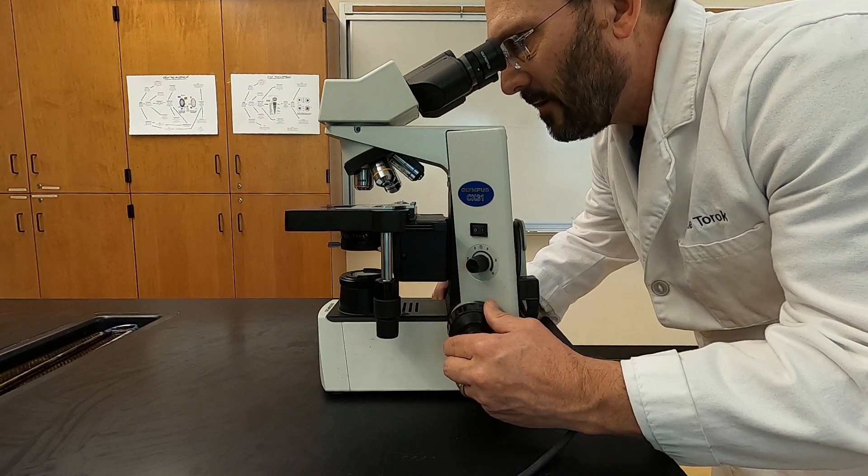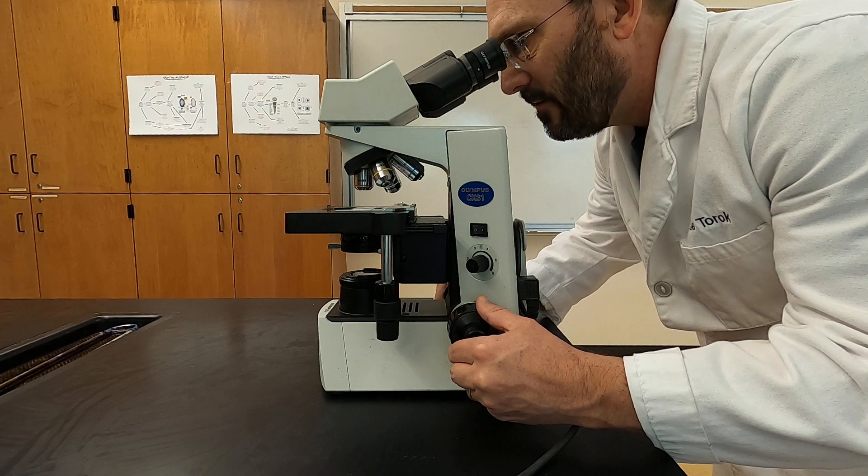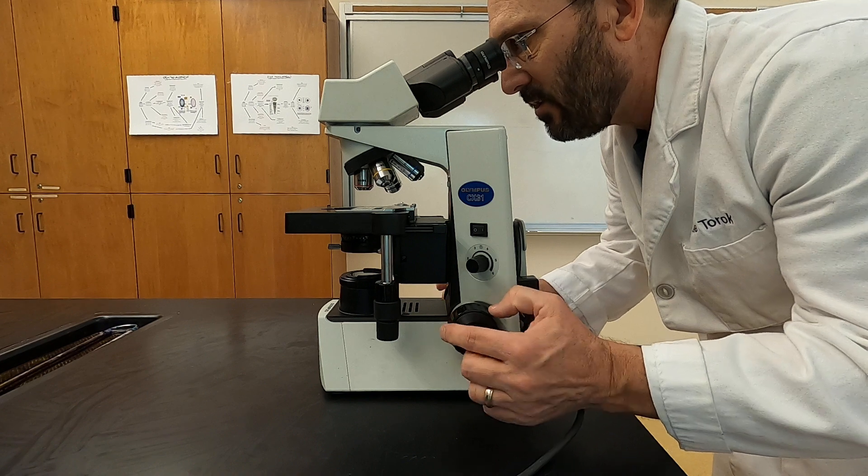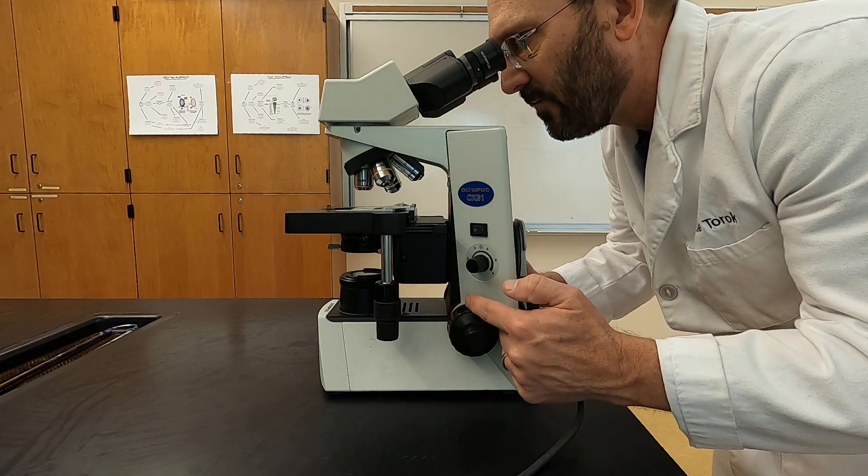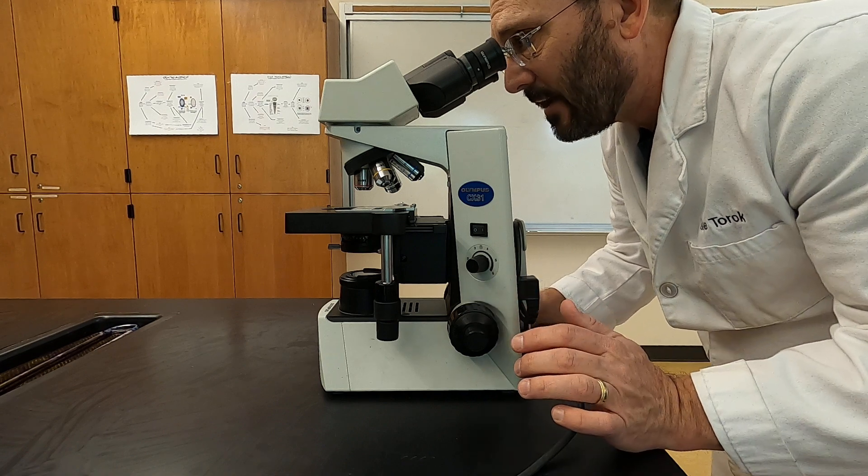You're going to lower the stage until the slide starts to become clear. You're going to lower the stage using your coarse focus knob. After you've used your coarse focus knob and you get an image there, you're going to be able to fine tune that image using your fine focus knob.